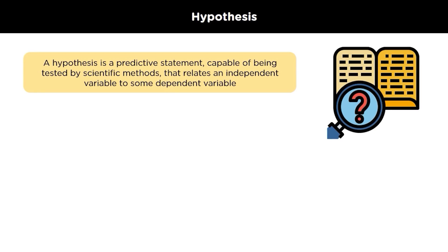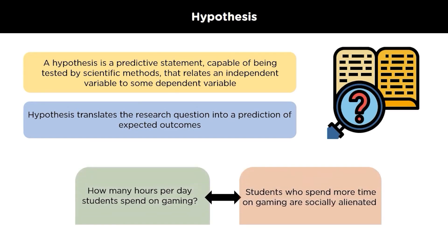Most of the time a hypothesis begins with a question which is then explored through background research. Hypothesis translates the research question into a prediction of expected outcomes. Unless you are creating an exploratory study, the hypothesis should always explain what to expect to happen. So as in the previous slide, we have framed a question that how many hours per student spend on gaming. Related to this question we can create a hypothesis that students who spend more time on gaming are socially alienated.